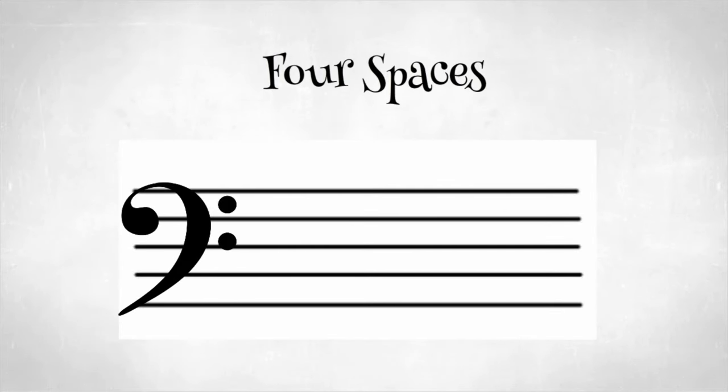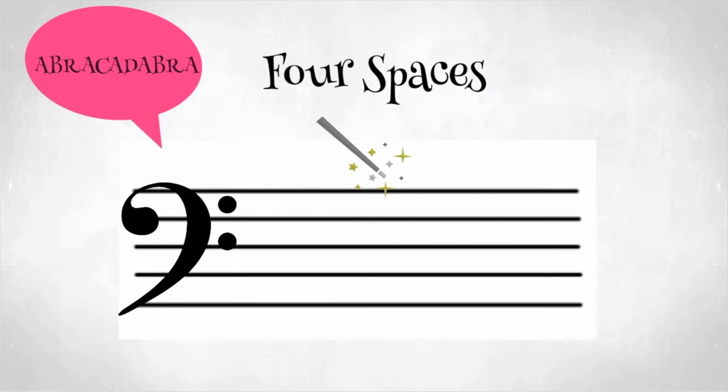The bass clef will also use its magical powers to assign a letter to each space found on the staff. Here, we give the spaces the letter A, C, E, and G. This one may be a little hard to memorize the order. So, let's see if there's an easy way to remember.